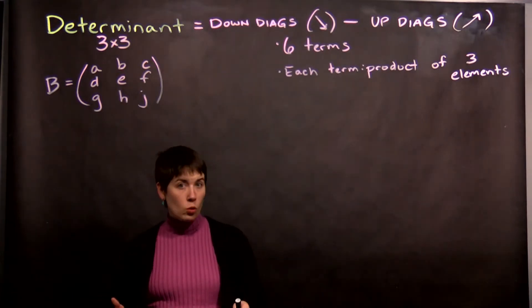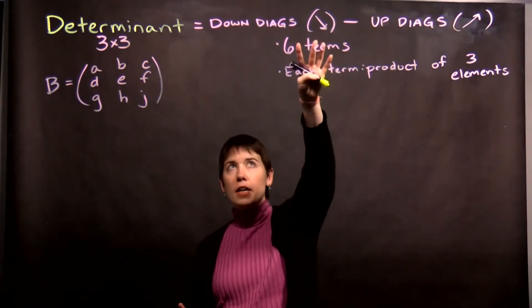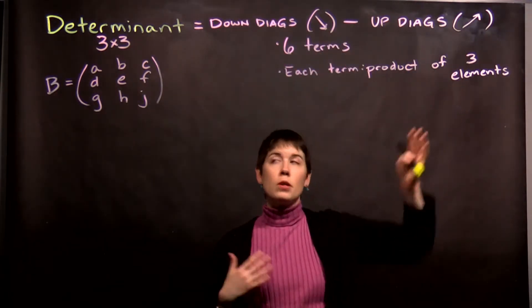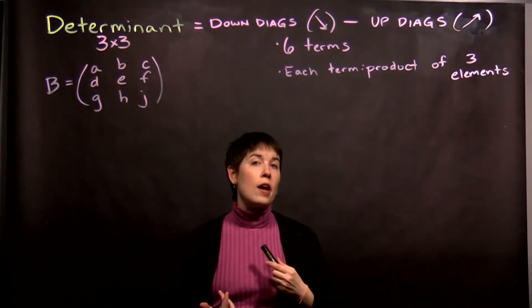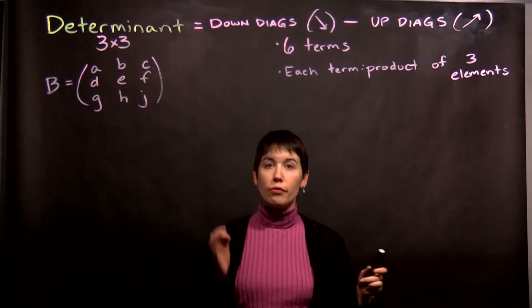Briefly, the approach I'm going to show you for a 3x3 matrix is to take all of the down-diagonal elements and then subtract from them the up-diagonal elements. You should have six terms when you do this, and each term needs to be a product of three elements.